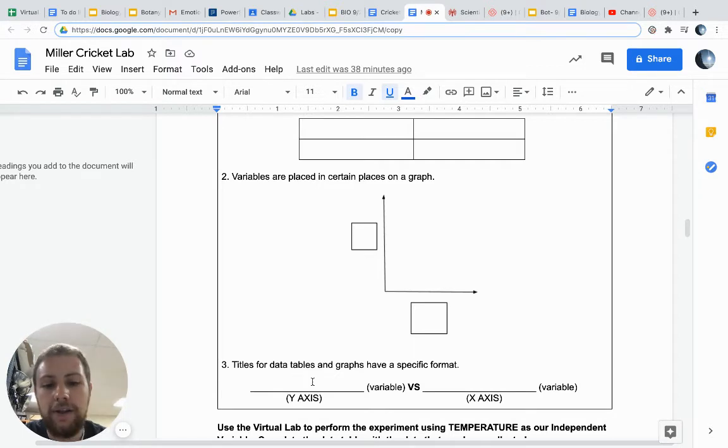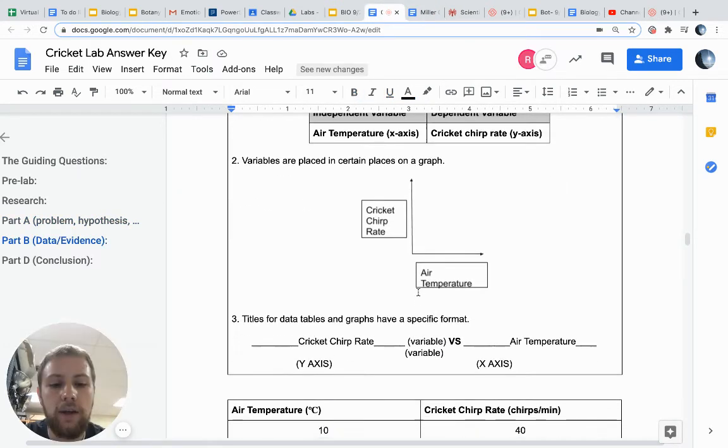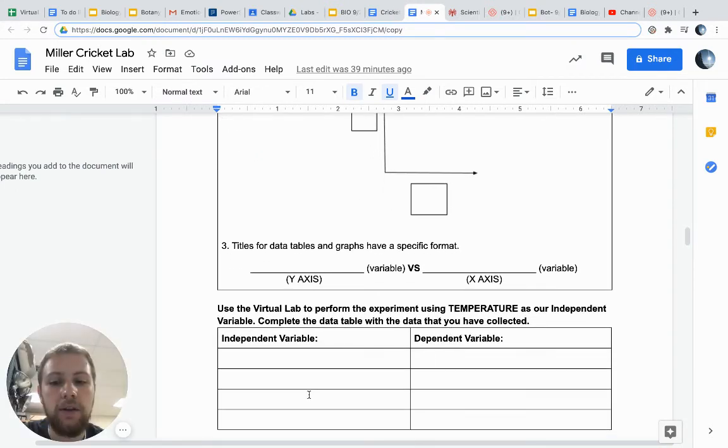Titles for data tables and graphs have a specific format. Our y-axis is going to be cricket chirp rate, and our x-axis, our independent variable, is going to be air temperature. Now that we have completed this part, we can look at our data. We know that when we chose an air temperature of 10 degrees Celsius, we got a cricket chirp rate of 40 chirps per minute. Make sure on your table that you put your variables in the correct column.